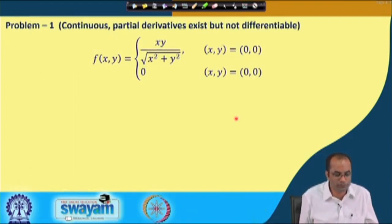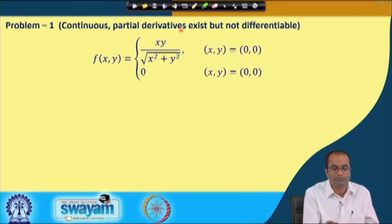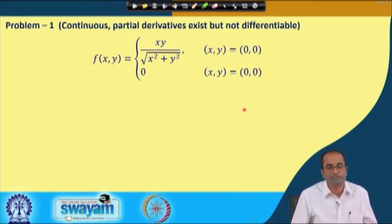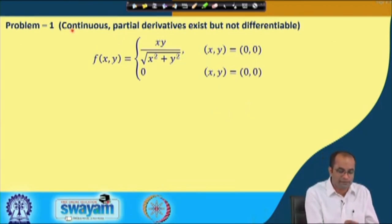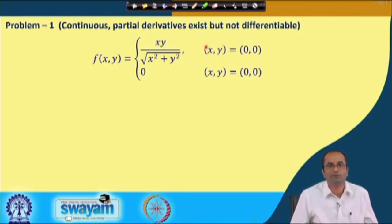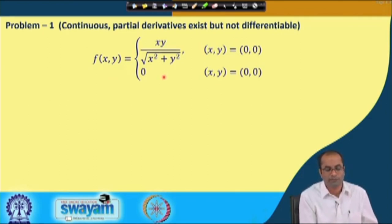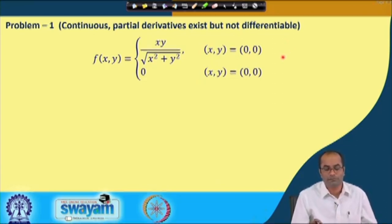Problem 1: We will show that the function is continuous and the partial derivatives exist, but the function is not differentiable. This demonstrates that continuity and existence of partial derivatives are only necessary conditions for differentiability — we cannot claim differentiability from these two conditions alone. This example has both f_x and f_y existing, but the function is still not differentiable.